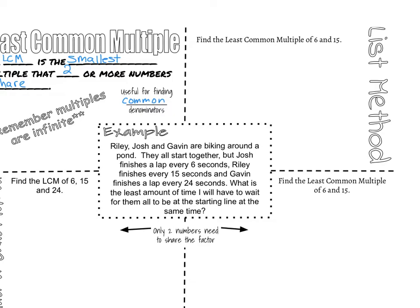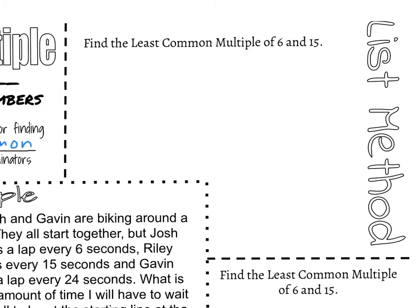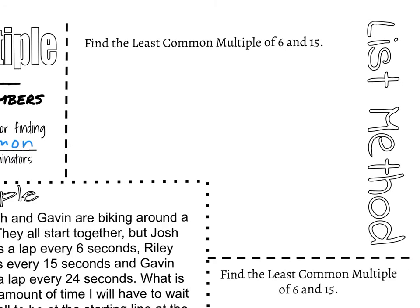We're going to start with the list method. When I do the list method for this example, I'm just going to do two numbers, but you could do it with three numbers just by adding in the third one. The list method is exactly like it sounds. What I'm going to do is you could either take a multiplication table or a calculator, and we're just going to list out the multiples of our numbers. So in this case, 6 and 15. Now don't forget that the first multiple of each number is that number itself. So the first multiple of 6 is 6 because 1 times 6 is 6.